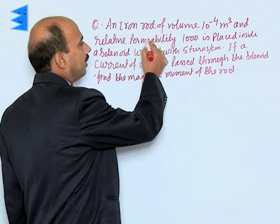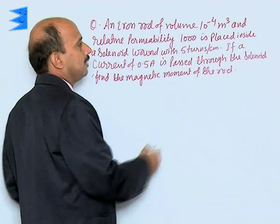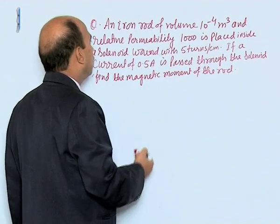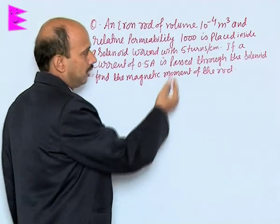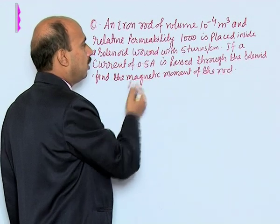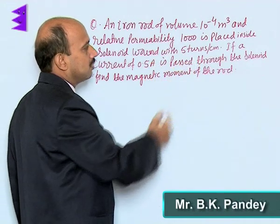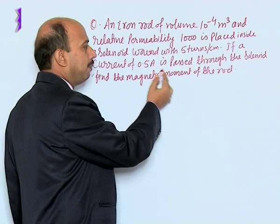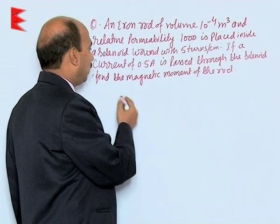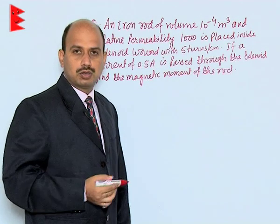Now, see here an iron rod of volume 10 raised to power minus 4 meter cube and relative permeability 1000 is placed inside a solenoid wound with 5 turns per centimeter. If a current of 0.5 ampere is passed through the solenoid, find the magnetic moment of the rod.